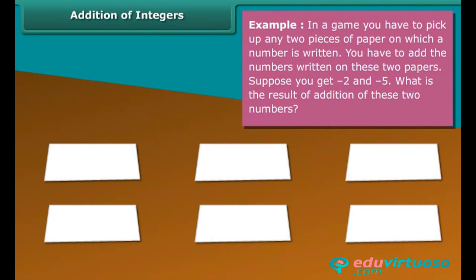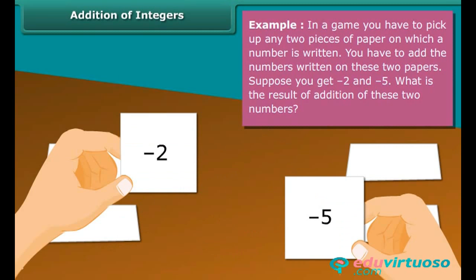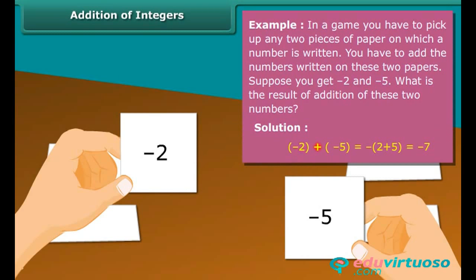Example: In a game, you have to pick up any two pieces of paper on which a number is written. You have to add the numbers written on these two papers. Suppose you get minus 2 and minus 5. What is the result of addition of these two numbers? Minus 2 plus minus 5 is equal to minus 2 plus 5, which equals minus 7.